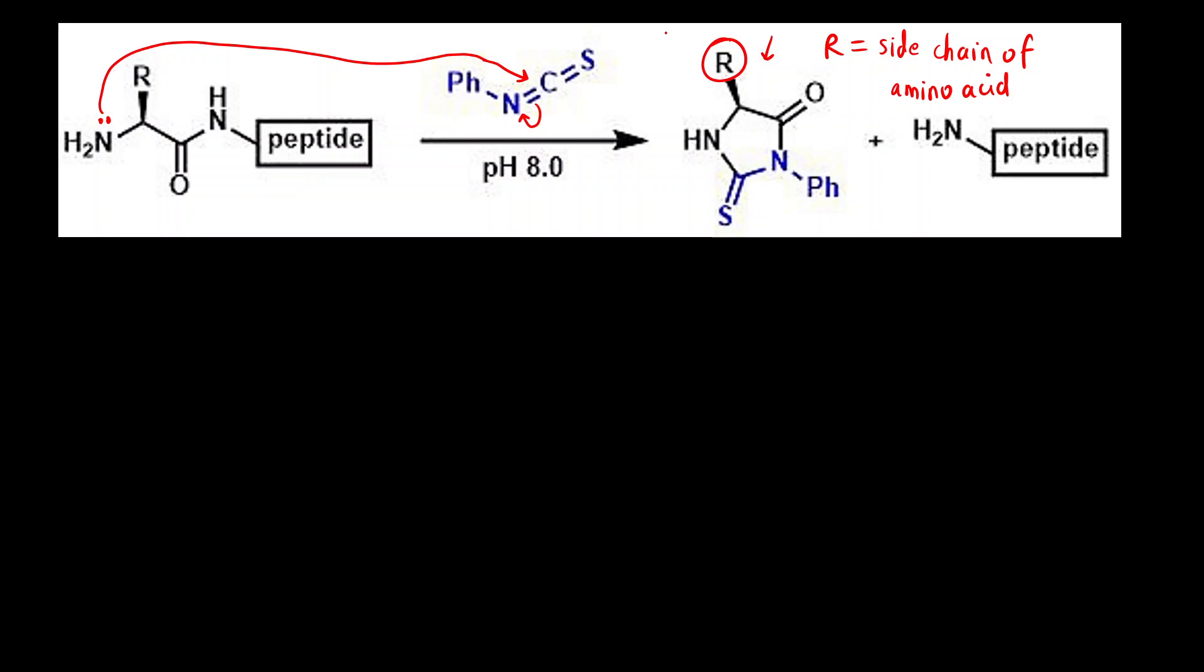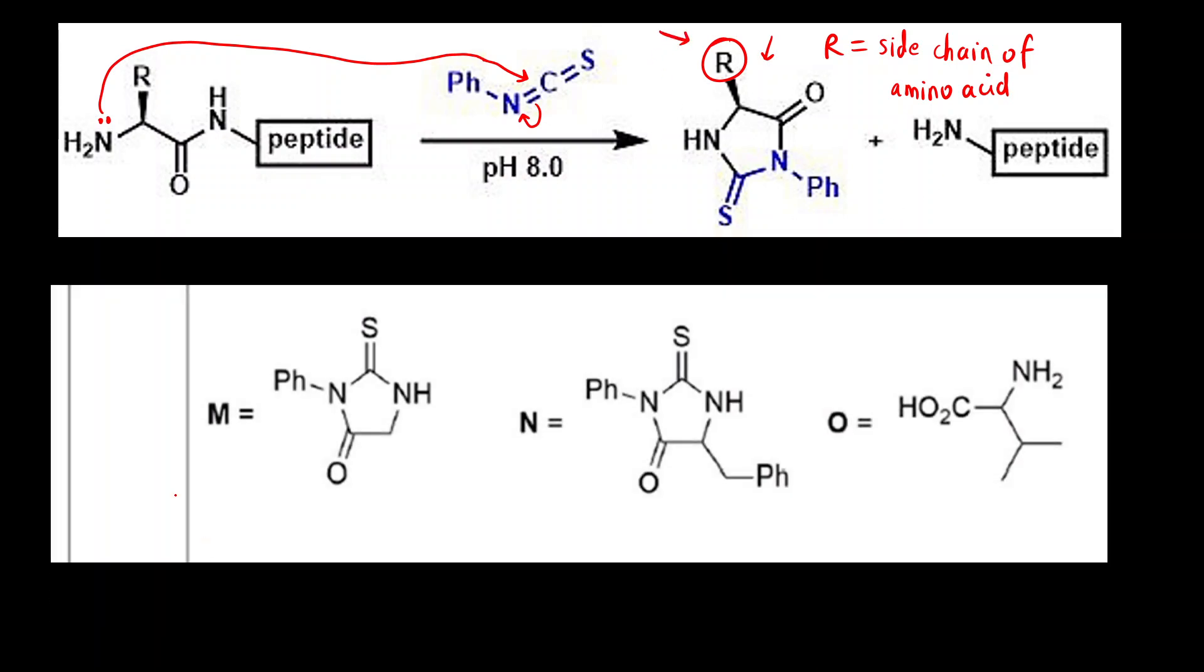So we have to identify the side chain and then accordingly identify the amino acid. So the M fragment will be the amino acid number one. If you compare all the three products, M, N and O, you can see at least in M and N what is the difference? It is the difference of this group.